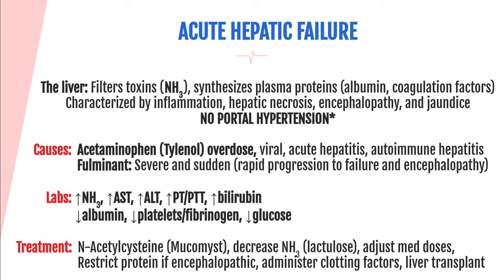In acute hepatic failure, there is no portal hypertension present. In chronic failure, portal hypertension develops from liver scarring, which impedes filtering. The most common cause of acute hepatic failure is acetaminophen overdose — whether intentional or unintentional through chronic supratherapeutic use. Other causes include viral hepatitis, autoimmune hepatitis, or toxin-induced hepatitis. Any of these can lead to fulminant hepatitis, meaning severe and sudden in onset.